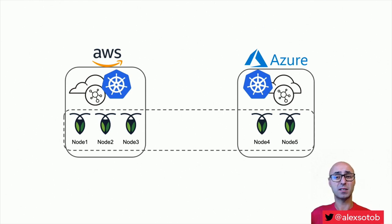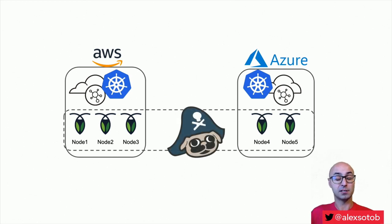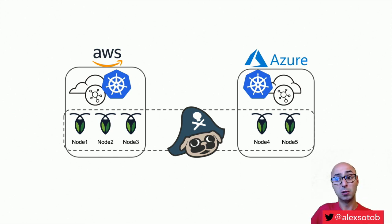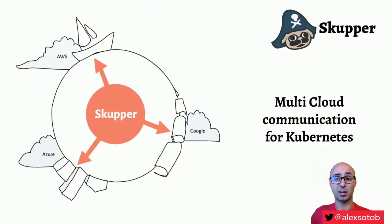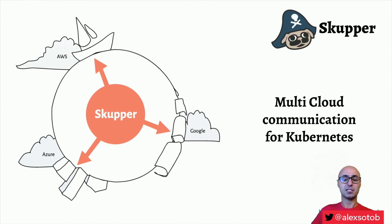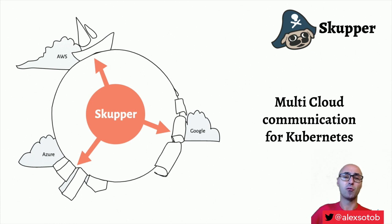This raises the question: how can I connect different pods from different clusters when they are on different networks? The answer is Skupper. Skupper makes all Kubernetes clusters connect between them, so from the point of view of each node there is only one cluster. Skupper is a multi-cloud communication layer for Kubernetes that enables secure communication across clusters with no VPNs and no special firewall rules.